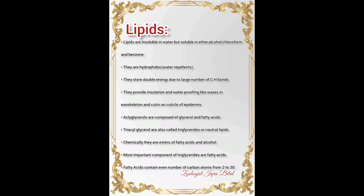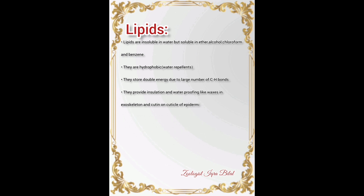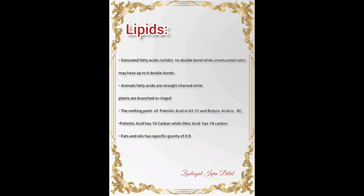Triacylglycerols are also called triglycerides or natural lipids, and chemically they are esters of fatty acids and alcohols. Fatty acids contain an even number of carbon atoms ranging from 2 to 30 — this range has already been asked in PPSC papers. Saturated fatty acids are solid and have no double bonds, while unsaturated fatty acids are oils and may have up to 6 double bonds. Animal fatty acids are straight-chain, while plant fatty acids are branched or ring-shaped.